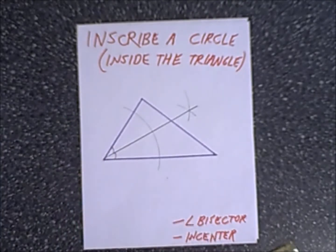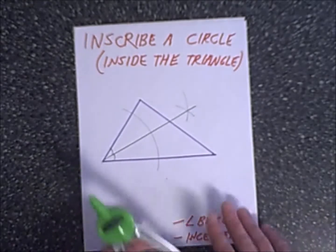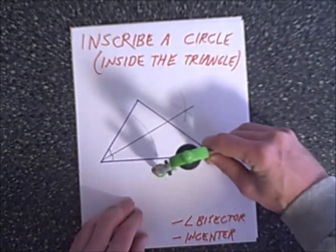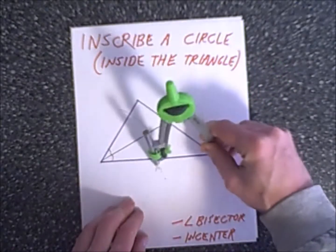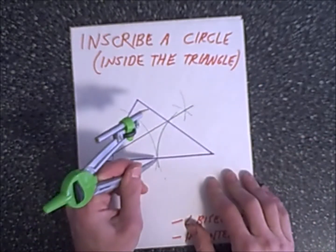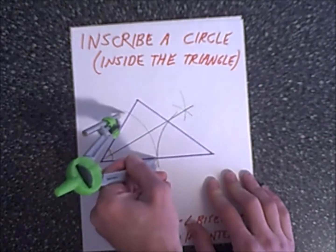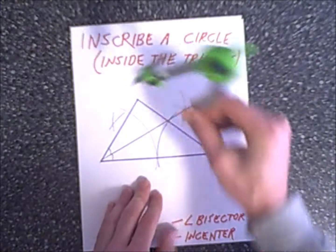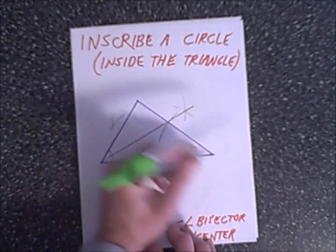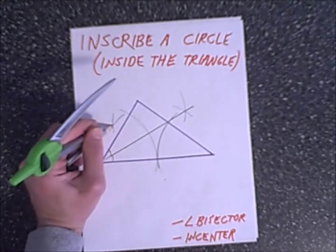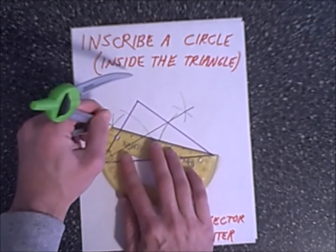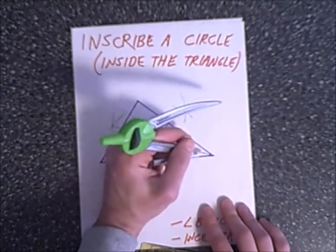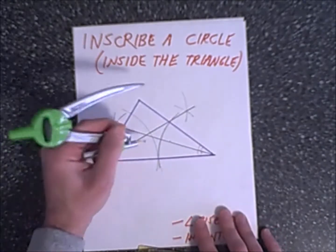Then we go to the second vertex and do the same thing — sweep an arc through the sides. Then from each side, we construct an arc. There's one up here and another arc over here. The point of intersection confirms these are congruent, and using geometry theorems we know this forms our angle bisector. We construct it through there — these are congruent. And we have our intersecting point, which will be our incenter.